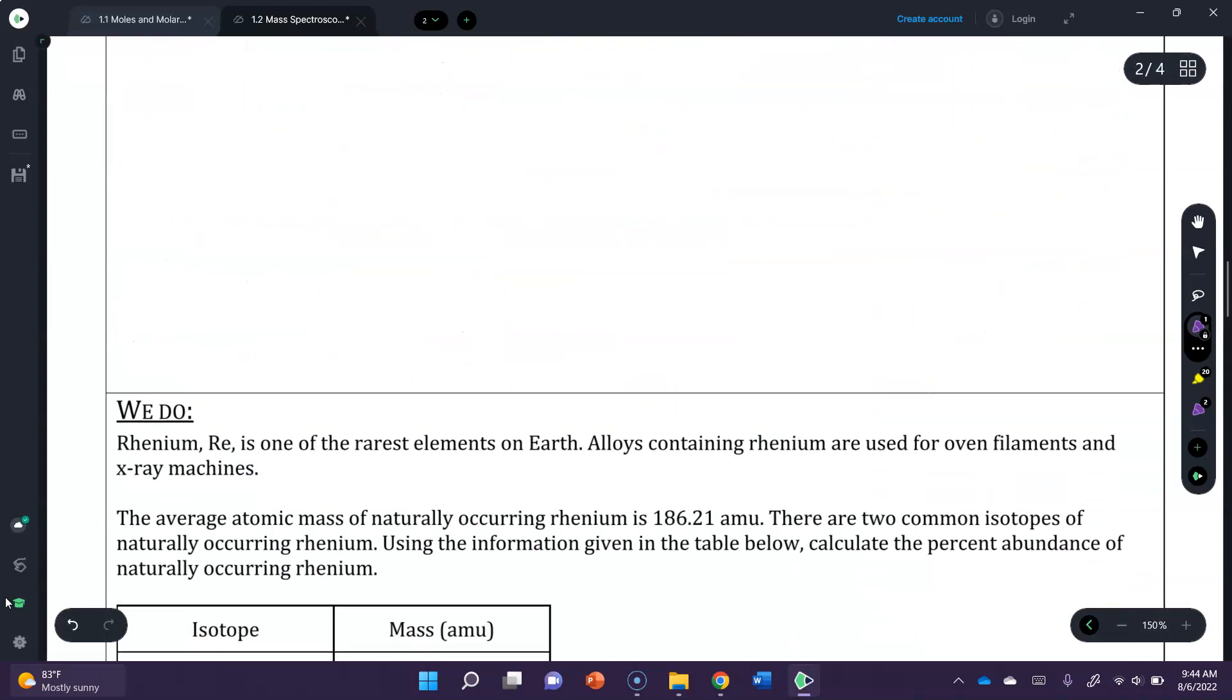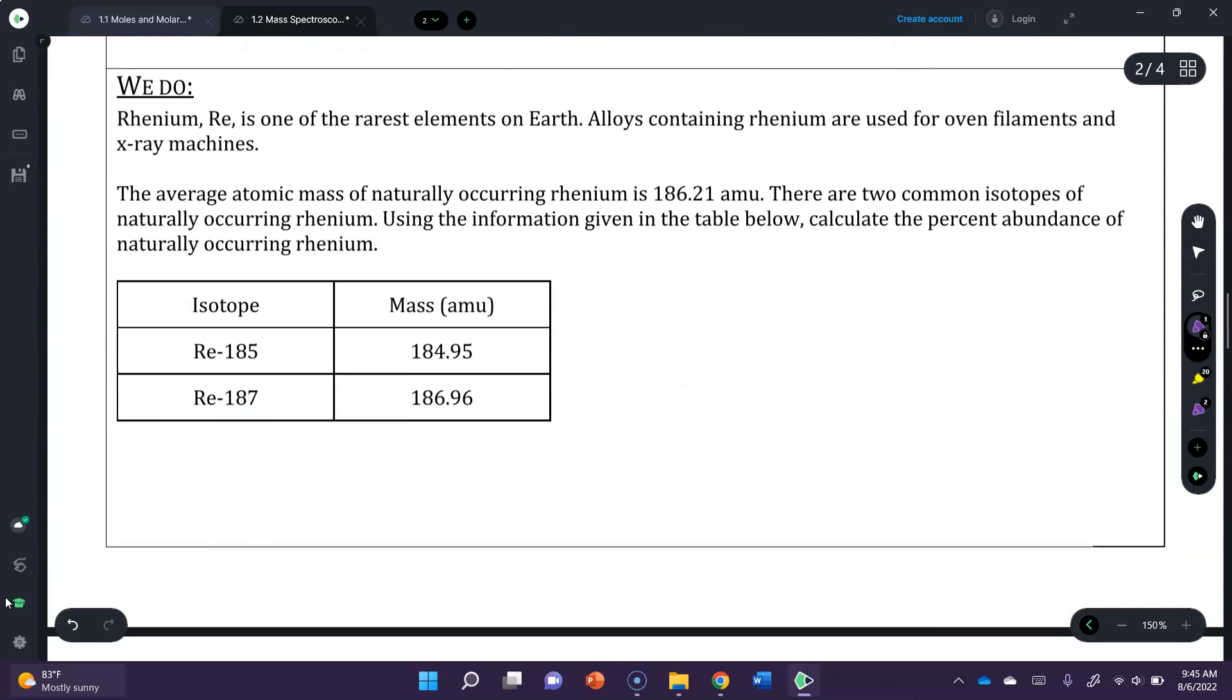Okay, so let's look at another one and have you guys try. So rhenium, Re, is one of the rarest elements on earth. Alloys containing rhenium are often used for oven filaments and x-ray machines. The average atomic mass of naturally occurring rhenium is 186.21 amu. There are two common isotopes of the naturally occurring rhenium. Using the information in the table given below, calculate the percent abundance of the naturally occurring rhenium.